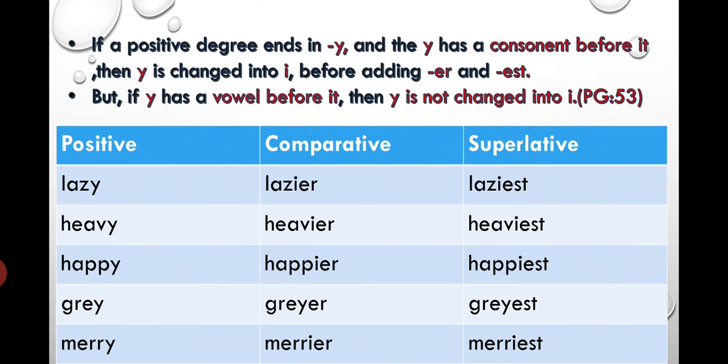Next, if a positive degree ends in Y and Y has a consonant before it - just like we studied in nouns - if your noun finishes with Y and there is a consonant before Y (you know, all alphabets other than vowels are consonants), then we cut the Y and put I in its place. The rest remains the same: you have to add er or est. But not after Y, you have to cut the Y.